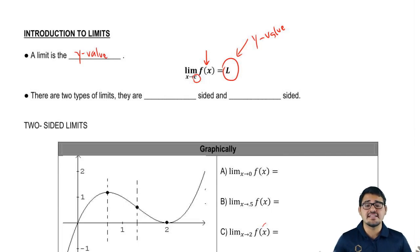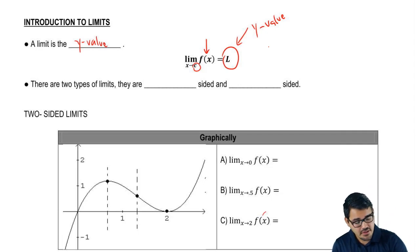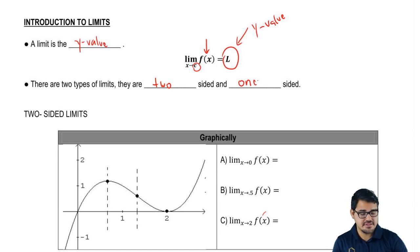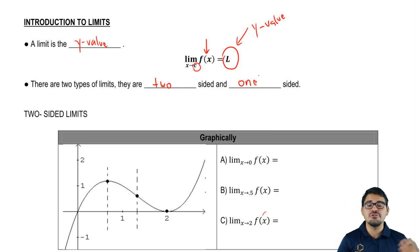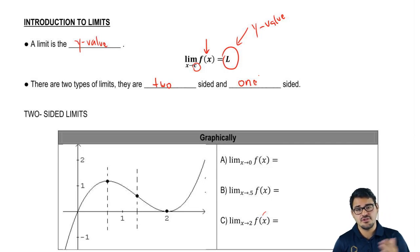Before I show you guys an example of how to compute this stuff graphically, let's go into the two different types of limits. We have two types of limits: two-sided limits and one-sided limits. I'm going to go over two-sided first and then one-sided. In most limits, when they ask you for them, the most traditional way is the two-sided way. Since it's most common, I decided to introduce that first.